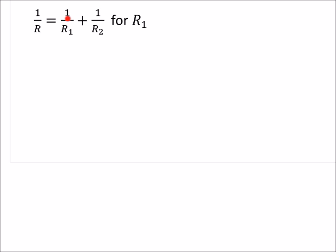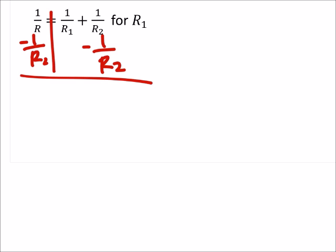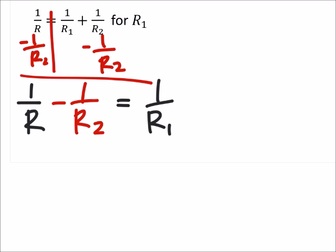All right, now the first thing we notice on this one is that this R1 right here is in the denominator, so it's a fraction. It's part of a fraction that's being added to another fraction. So what I would want to do in this case, well actually, I was thinking of making common denominators right there, but it looks like it would be helpful first to subtract 1 over R sub 2 from both sides. So minus 1 over R sub 2. So that gives us, we had the 1 over R, but now it's minus 1 over R sub 2, and this would equal that 1 over R sub 1.